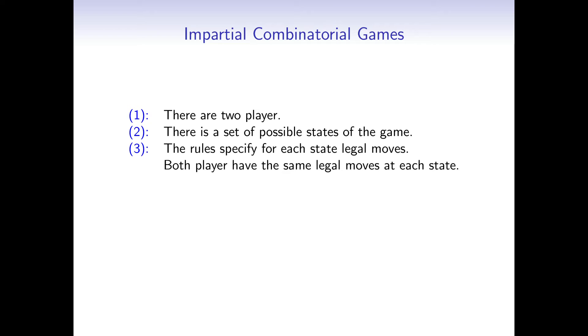These are the conditions for impartial combinatorial games. There are 2 players. There is a set of possible states of the game. Basically each position, each arrangement of the board, the pile, and so on is a state. The rules define for each state a set of legal moves. Both players have the same legal moves at each state, so the set of moves doesn't depend on the player. The players take turns.